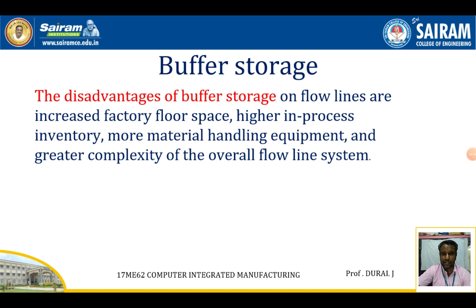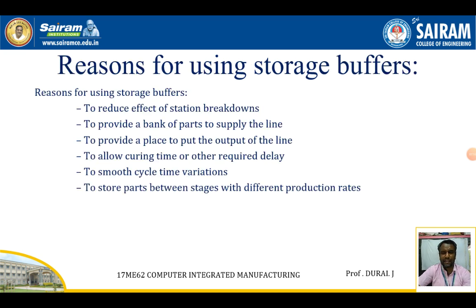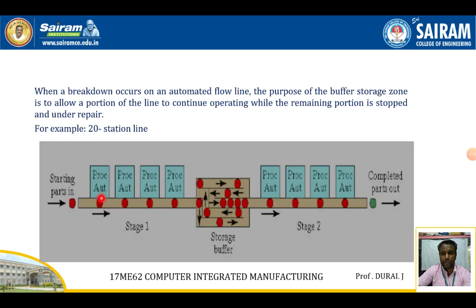Then come the work part transfer methods. There are three types: one is the continuous work part transfer, the second is the intermittent work part transfer method, and the third is the asynchronous work part transfer method. Continuous means the flow line continuously moves — that is called the continuous work part transfer method. It does not need to wait for anything.